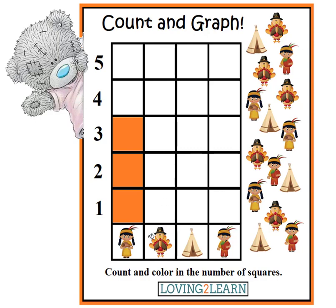Let's do another one. Here is a turkey, so we come over here and count again. How many turkeys do we see? One, two, three, four, five. So we come over to our graph and we have to fill five squares in: one, two, three, four, five.